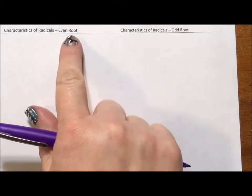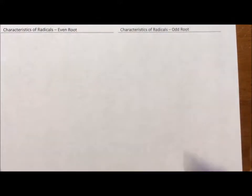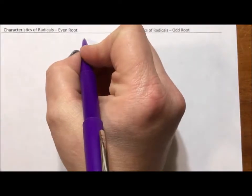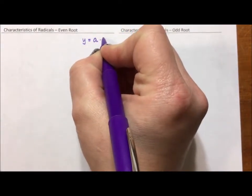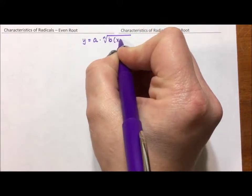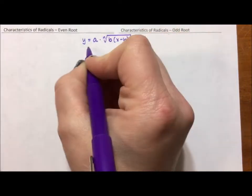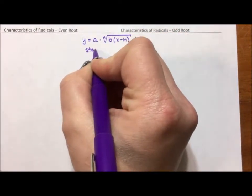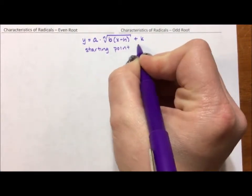And what ends up happening is it's different if the root has an even root or an odd root. Okay, so our radical looks like y equals a times the nth root of b times x minus h plus k. This gives us a starting point of (h,k).